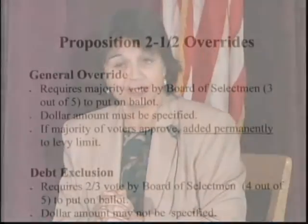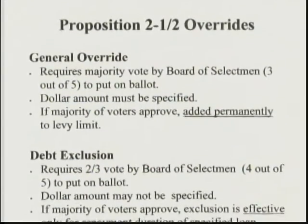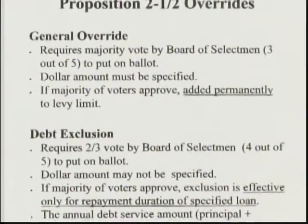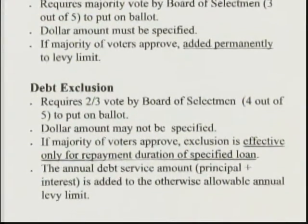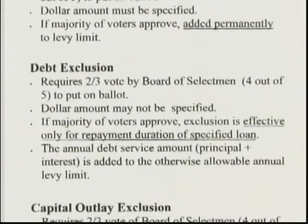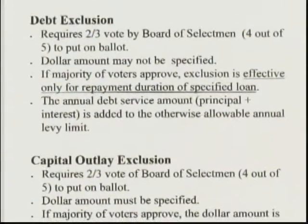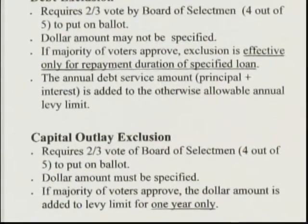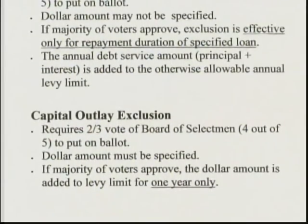A tax levy is the amount that the town is allowed to raise in property taxes each year. Proposition 2.5 limits the amount of growth that we can have in taxes each year — it is limited to the amount that was levied the prior year, plus 2.5%, plus an allowance for any new growth in town. New growth would generally be new construction or additions in property that would result in increased valuation. If the town wishes to raise taxes above the limits allowed by Proposition 2.5, an override question on a ballot is required.